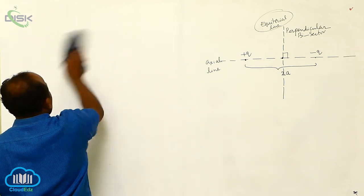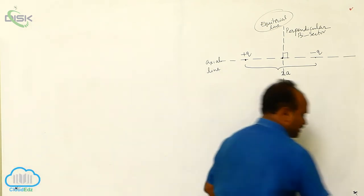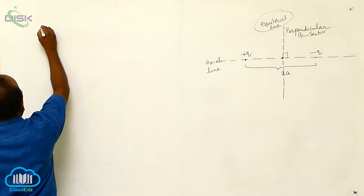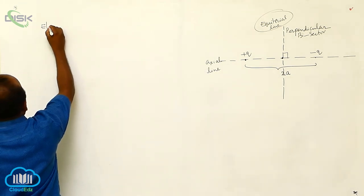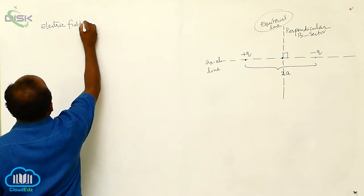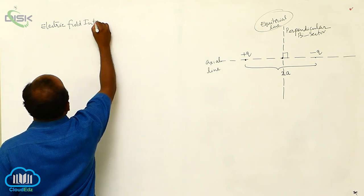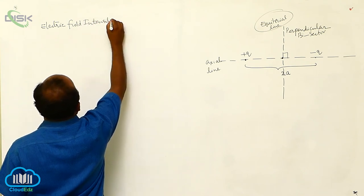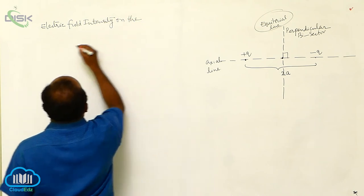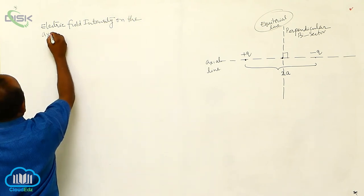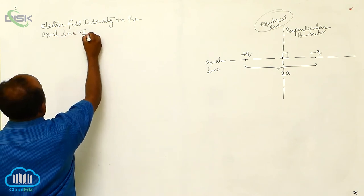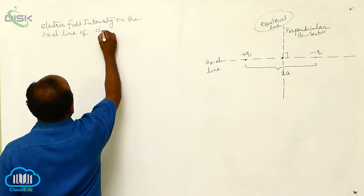Now we shall calculate the electric field intensity on the axial line of the electric dipole.